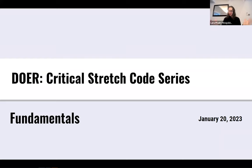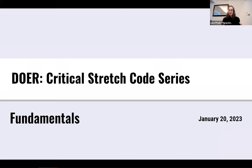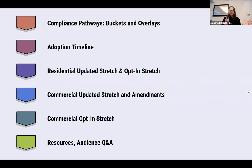This is a DOER critical code series - we'd like to have this as a series, and this is our first fundamentals session. Understanding there's a lot in the new stretch and opt-in codes, we really want to just cover those high-level fundamentals. This series will continue with a more dedicated residential discussion, then a more dedicated commercial discussion, and then our hope is to have a discussion about where the code will be going - how climate justice comes in and aspects of embodied carbon.